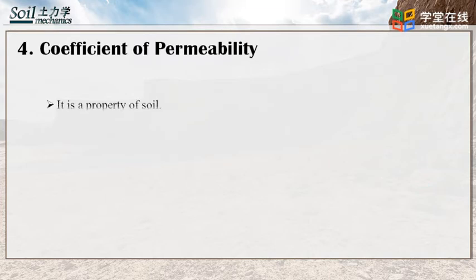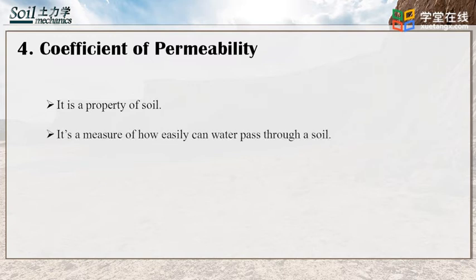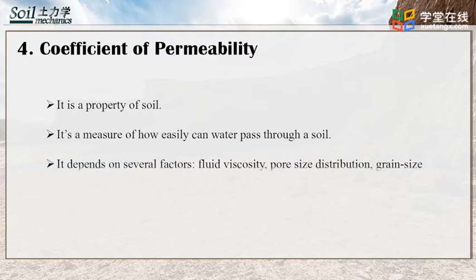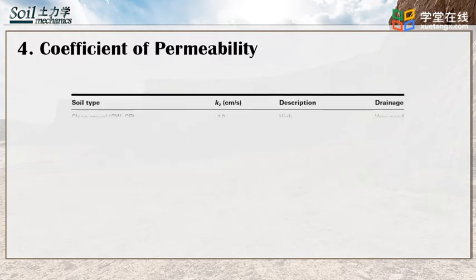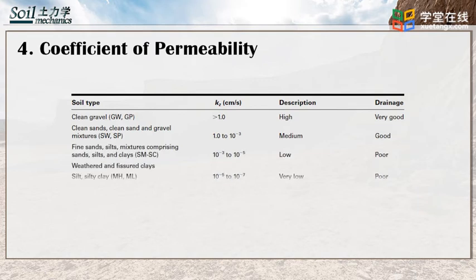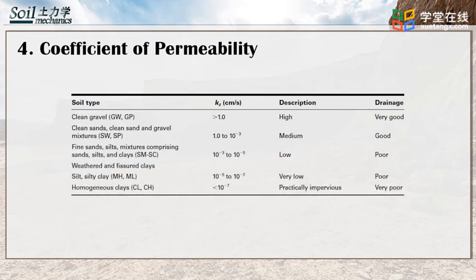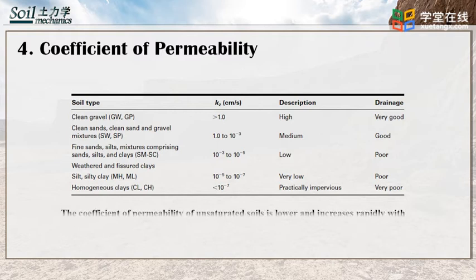In Darcy's equation, the coefficient of permeability is a property of soil, reflecting how easily water can pass through the soil. It depends on several factors such as viscosity. The coefficient of permeability K varies widely for different soils. Some typical values for saturated soil are given in the table. The coefficient of permeability of unsaturated soil is lower and increases rapidly with the degree of saturation.